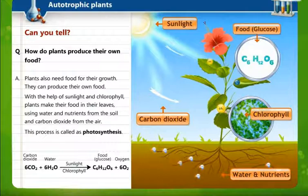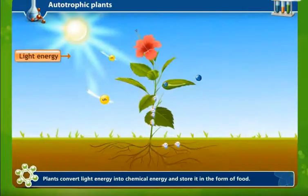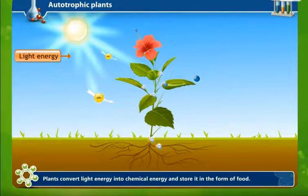In the presence of sunlight and chlorophyll, they give us food in the form of glucose, and when plants take in carbon dioxide they give out oxygen. So glucose and oxygen are the end products of photosynthesis. Photosynthesis is the process by which plants prepare their food, converting light energy into chemical energy stored as food.